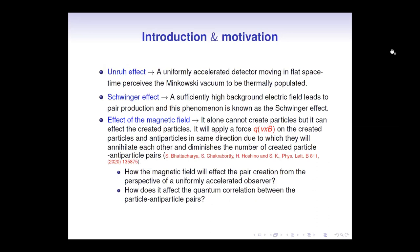We know there are two well-known phenomena: the Unruh effect and the Schwinger effect. According to the Unruh effect, a uniformly accelerated detector moving in flat spacetime perceives the Minkowski vacuum to be thermally populated. Whereas according to the Schwinger effect, a sufficiently high background electric field leads to pair production.